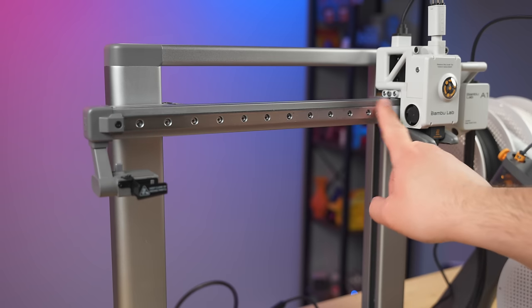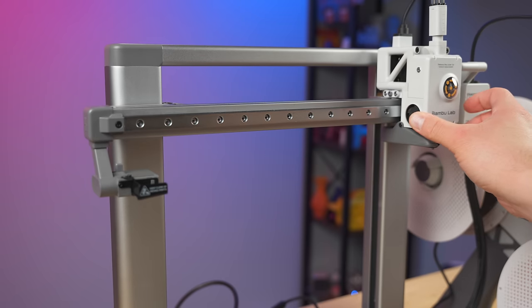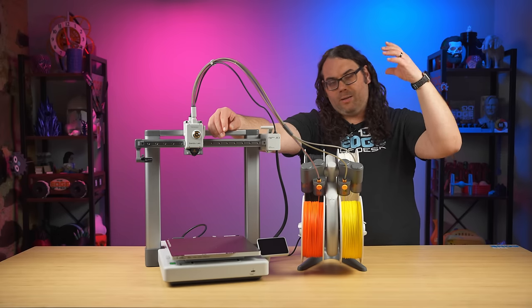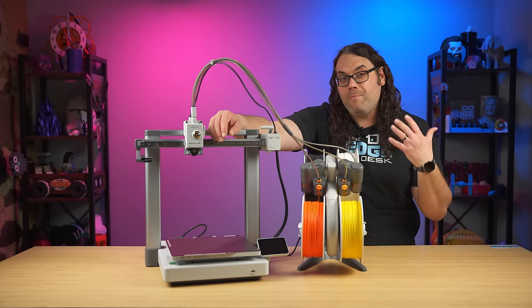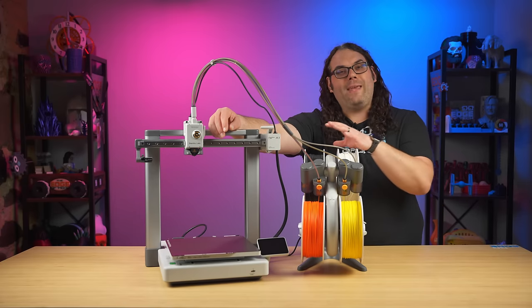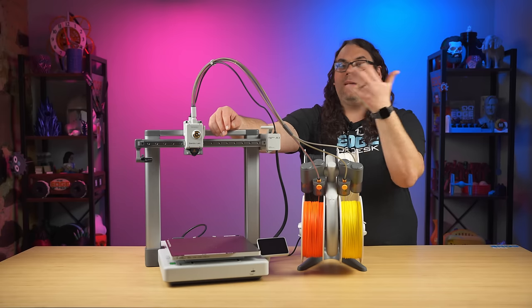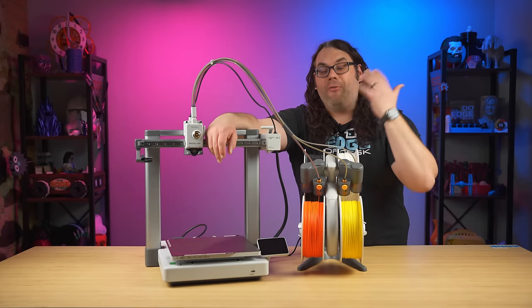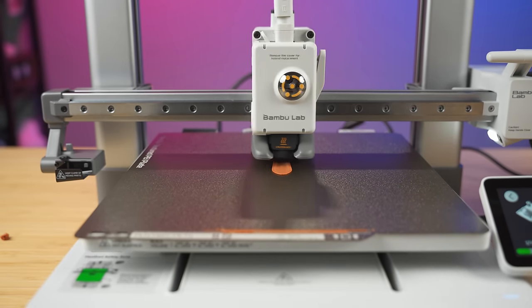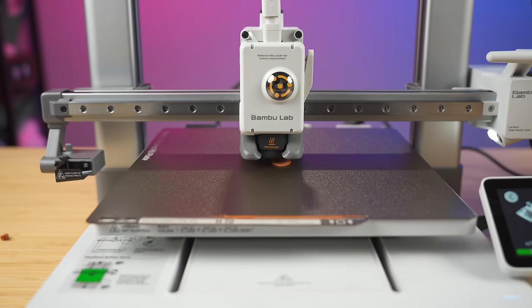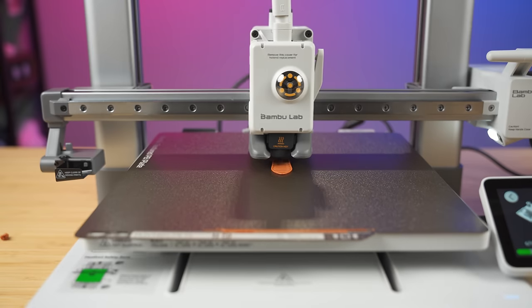The A1 runs on linear rails and that really helps the printer run smoother and more accurate. Another great thing about linear rails is that it's very low maintenance compared to V-wheels where you have to adjust the tension. Linear rails are much easier because you don't have to guess about the tension. So all of that combined means that this printer can move fast. They say it can run at 500 millimeters a second with a top acceleration of 10,000 millimeters a second squared. It is slower compared to the X1 carbon because that's a core XY, but this thing is very fast for a bed slinger.